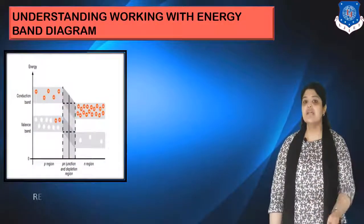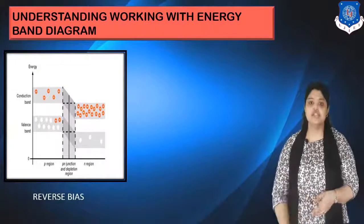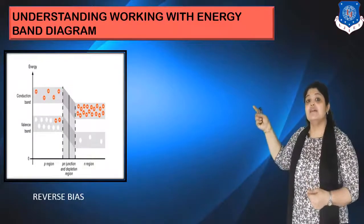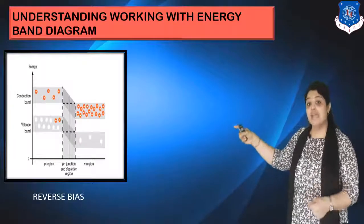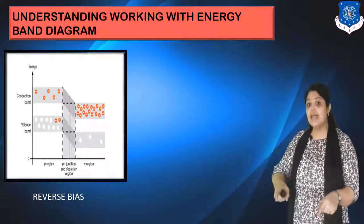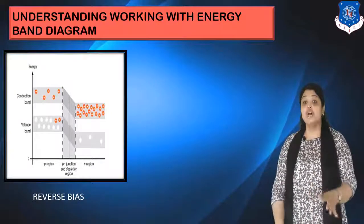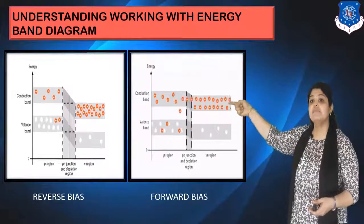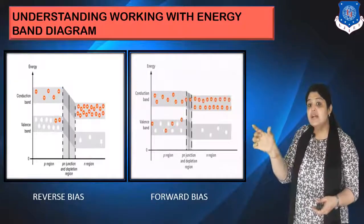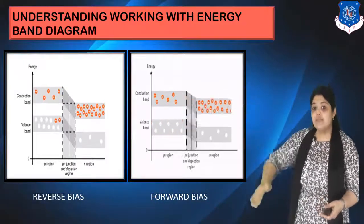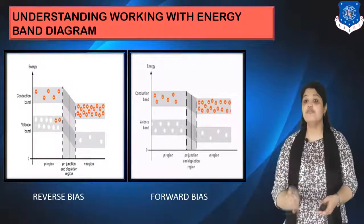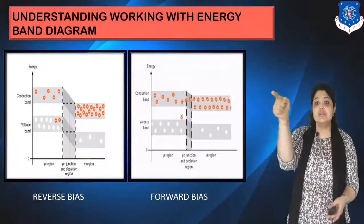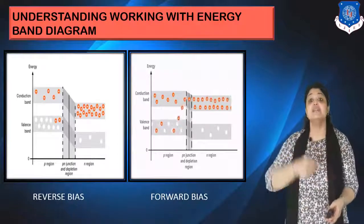Let's understand the working of a PN junction diode with the energy band diagram. In reverse bias, electrons in the conduction band of N type are not able to move to P type because no energy is provided. In forward bias, because energy is provided, the depletion layer reduces and electrons move onto the valence band of P type — electrons from N recombine with holes in P. Electrons cross the barrier and move to the P side, meaning your diode is conducting.